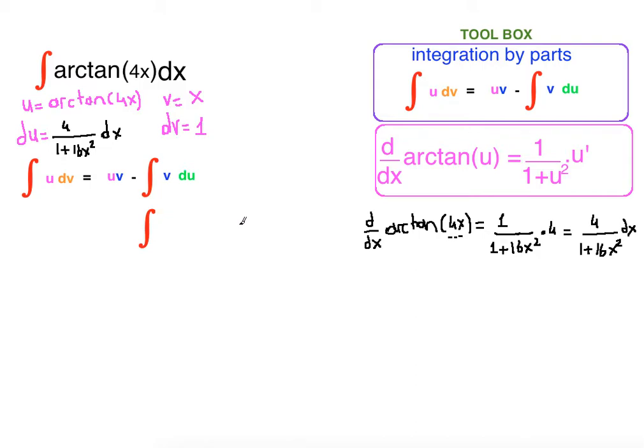Now let's apply the formula integration by parts: u times v minus integration of v du. What is u times v? x times arctangent of 4x. So x arctangent of 4x minus integral of v du. What is v? x. What is du? 4 over 1 plus 16x squared dx.